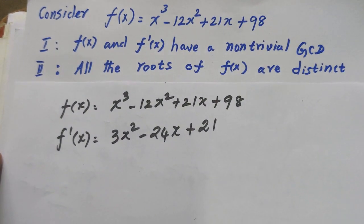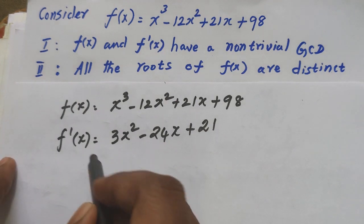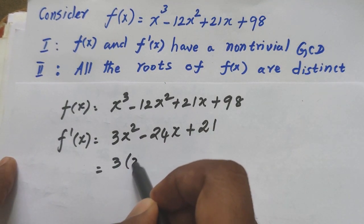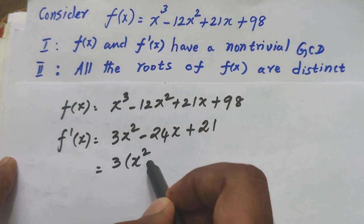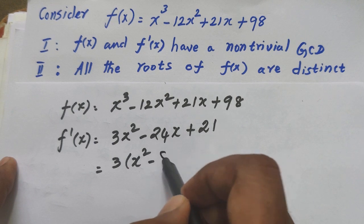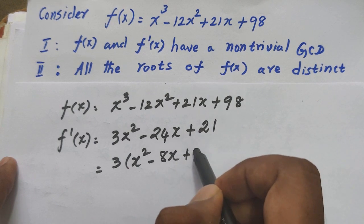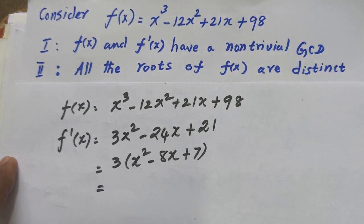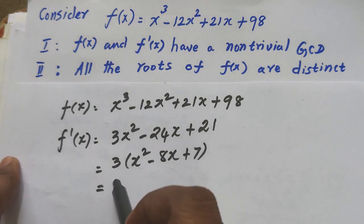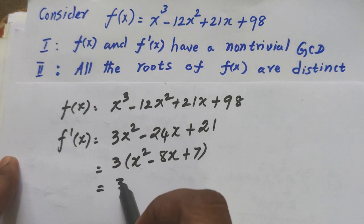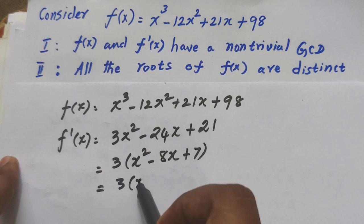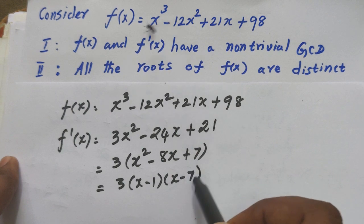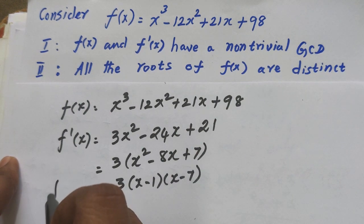Now factorizing f dash of x, we take out the common factor 3 from outside. Inside we get x squared minus 8x plus 7, which factors as x minus 1 times x minus 7. So f dash of x equals 3 times (x minus 1)(x minus 7).